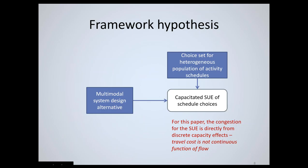The framework hypothesizes a capacitated stochastic user equilibrium of schedule choices, drawn from a choice set of a heterogeneous population of activity schedules, sensitive to different multi-modal system designs. For this paper, we did not consider nonlinear congestion effects on road links — we wanted to focus primarily on schedule effects. More sophisticated travel cost relationships can be incorporated later.